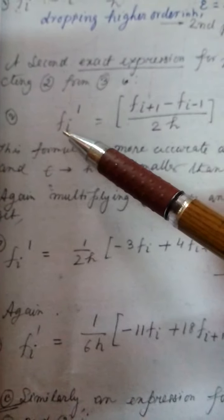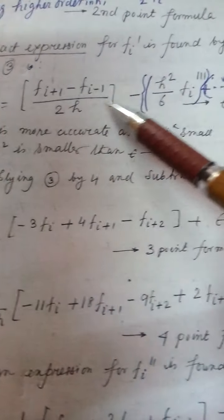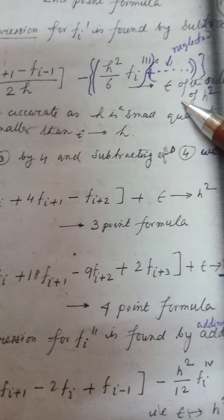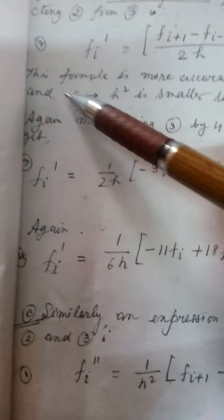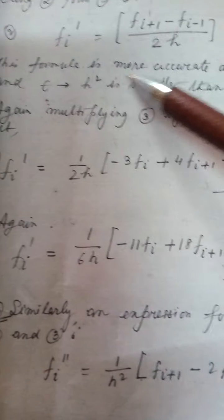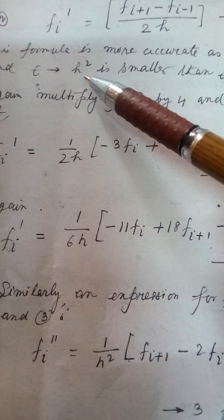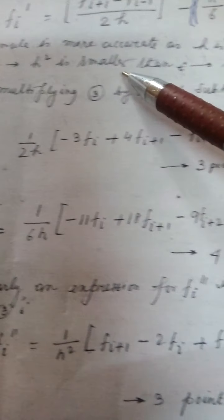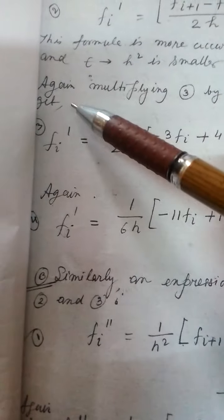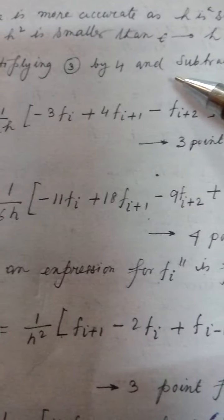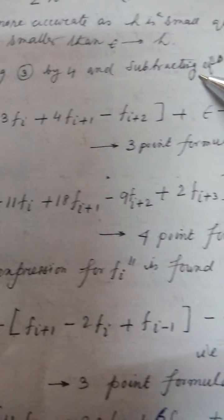In the last video we have the continuation of this. Now we have derived this formula. This is the error, total in the order of h square. This formula is more accurate as h is very small quantity. Epsilon in error is h square, in the order of h square, smaller than h.